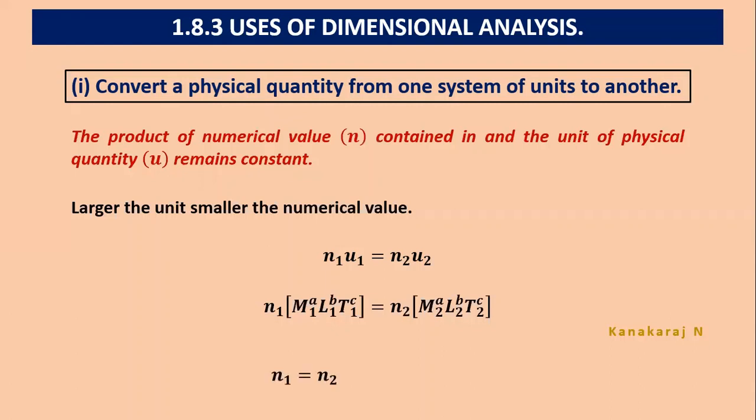Now we have to go with N1. N1 equal to N2, M2 by M1 to the power A and L2 by L1 to the power B and T2 by T1 to the power C. This is how we can find the value of one physical quantity in other system of unit. Suppose, let me go with a simple example. Here, I write N2 equal to 1 Newton. And I didn't know what is N1. Let me write in CGS the unit of force is dyne.